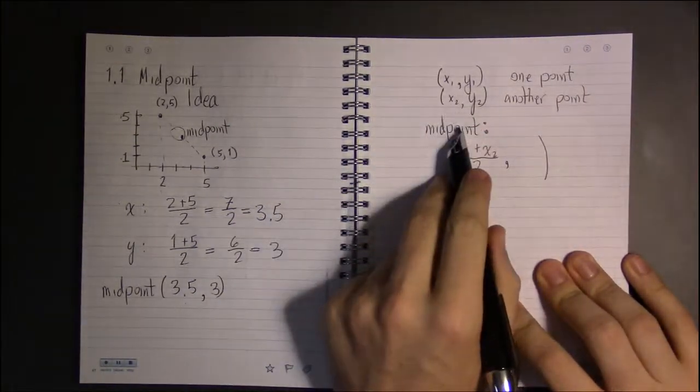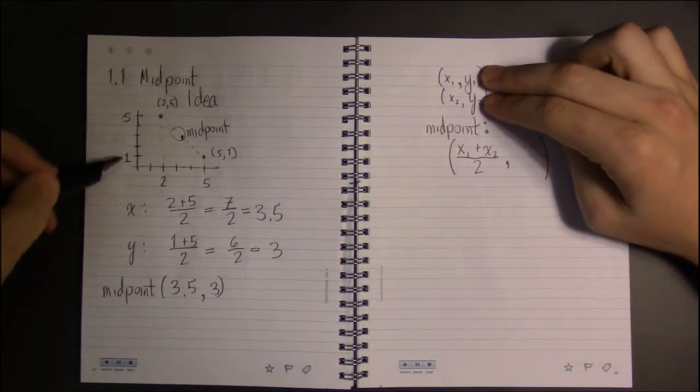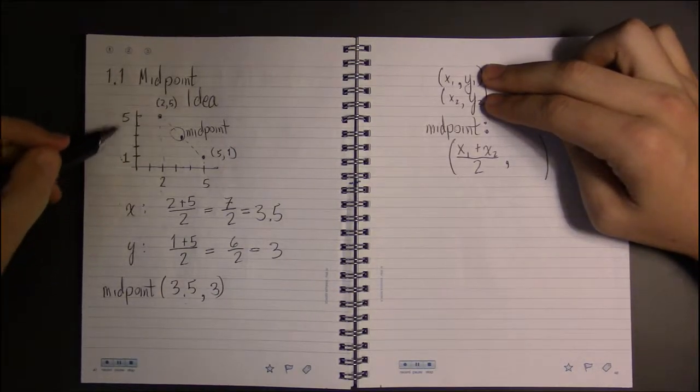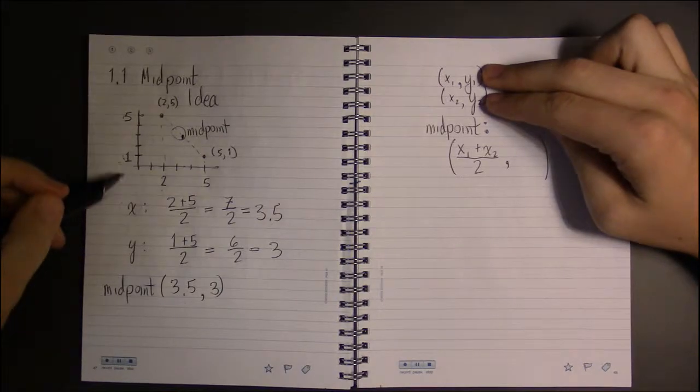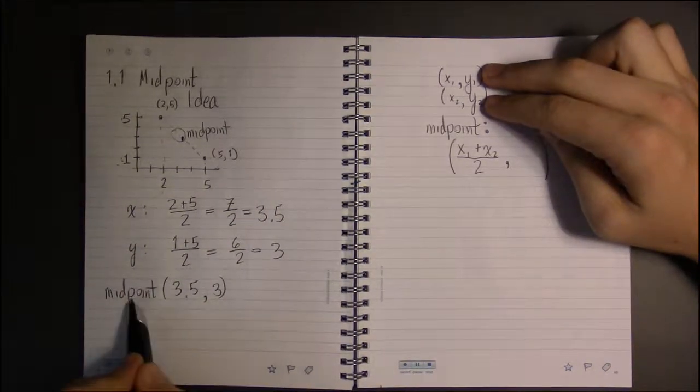Then we looked at the y-coordinates and we did the same thing. We averaged these two y-coordinates: y₁ plus y₂ divided by 2. And the number we got out was our y-coordinate for the midpoint.